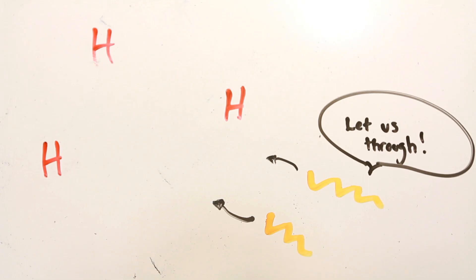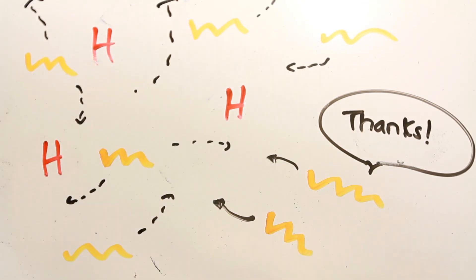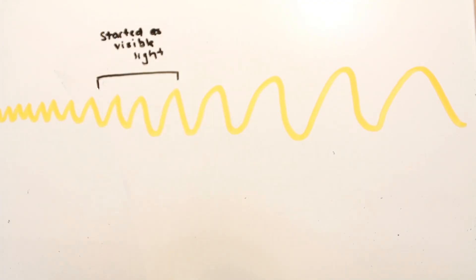This caused the universe to become transparent. Suddenly, the photons, unobstructed, could travel freely through space. At that time, most of these photons were within the visible light spectrum.